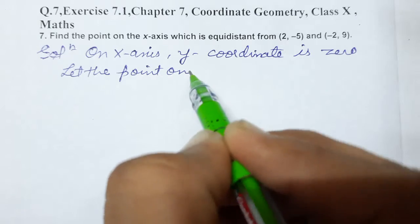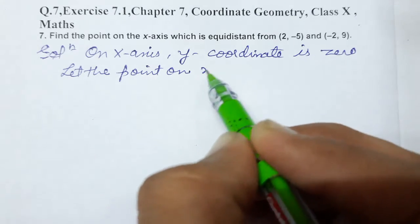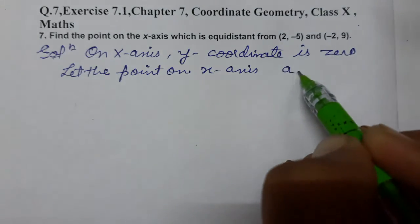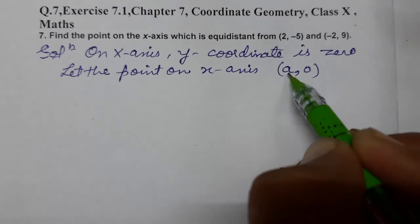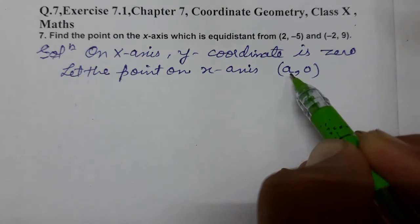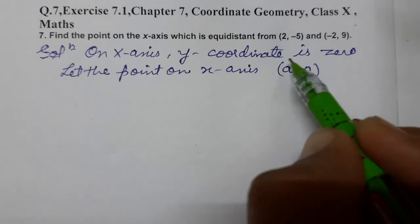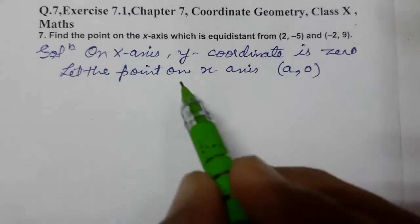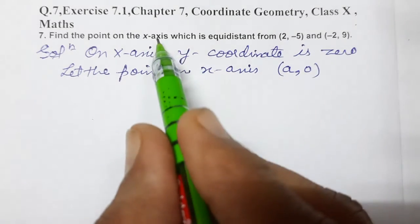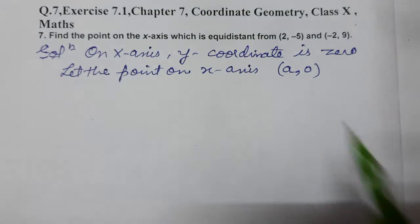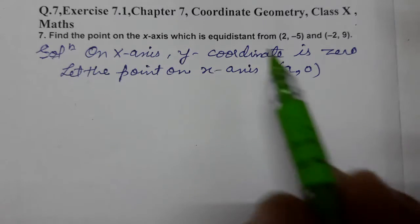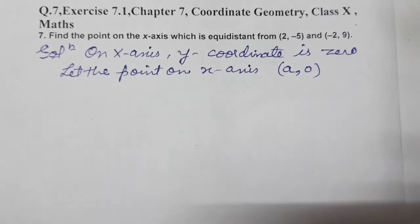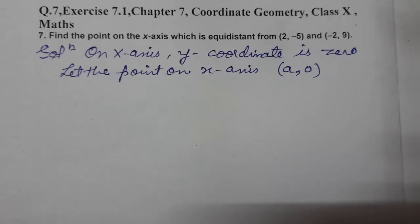Let the point on x-axis be (a, 0) — we take x-coordinate as 'a' and y-coordinate as 0, because on the x-axis y-coordinate is always 0. Now, we need to find a point on the x-axis which is equidistant — equal distance — from both given points.